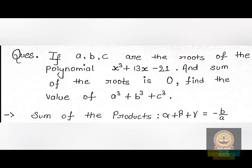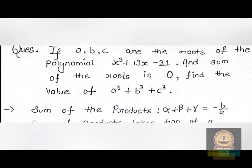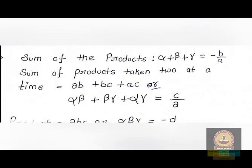Today we are going to solve the Week 4 graded assignment question for Term 1. The question is: if a, b, and c are the roots of the polynomial x³ + 13x − 21, and the sum of the roots is 0, then find the value of a³ + b³ + c³.